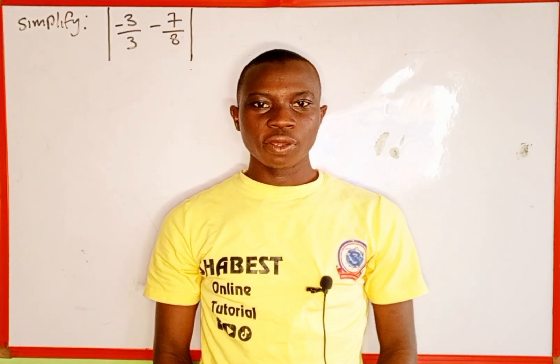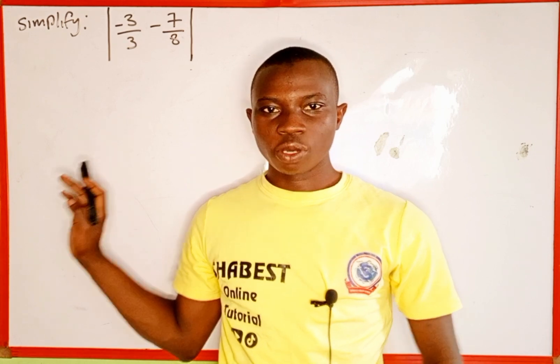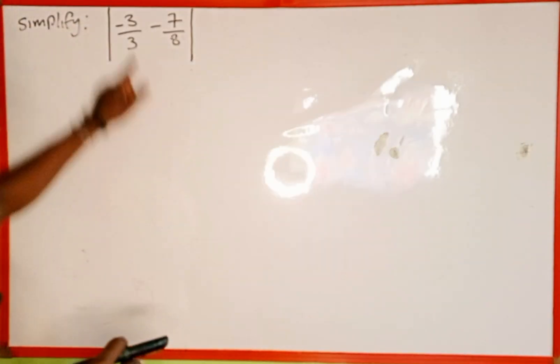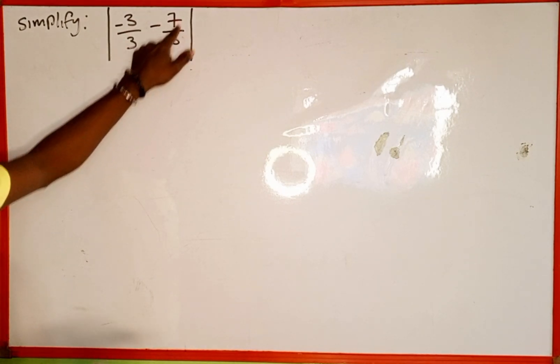Hello everyone, you are welcome back to Shabbat's Online Tutorial. In today's tutorial we are going to learn how to simplify this expression on the board: we are given absolute value of negative 3 over 3 minus 7 over 8.